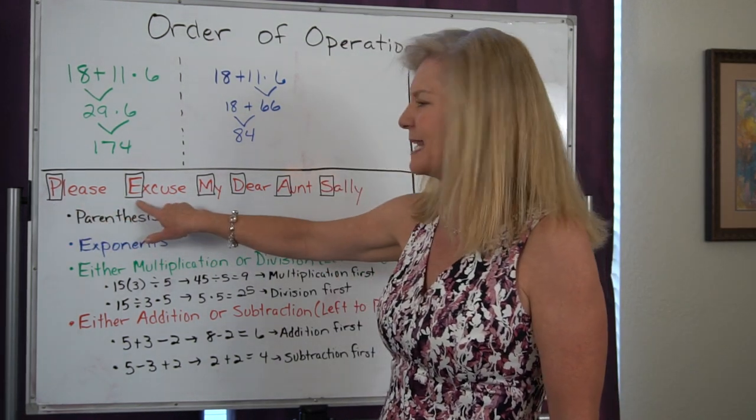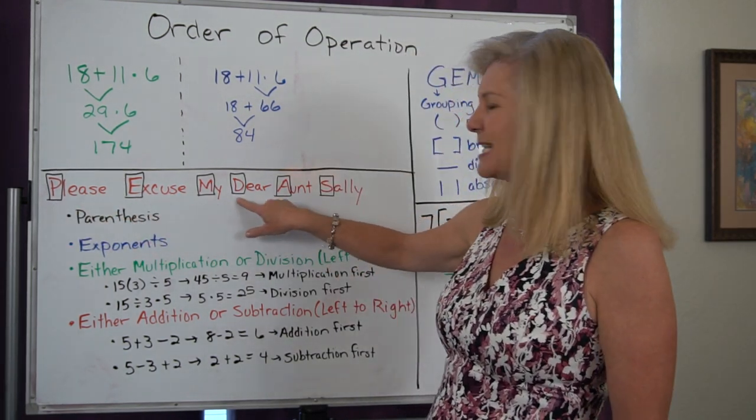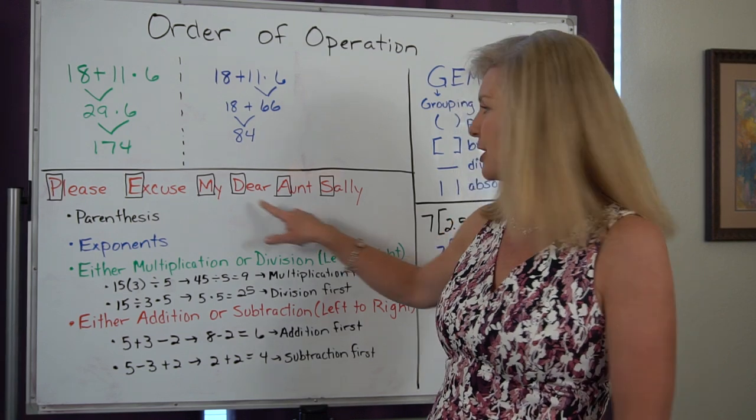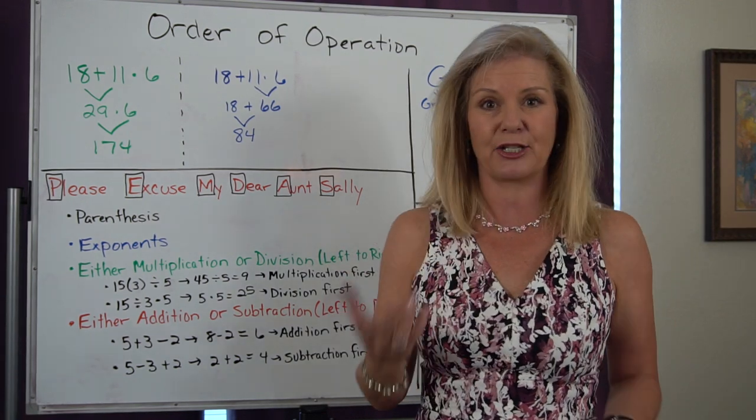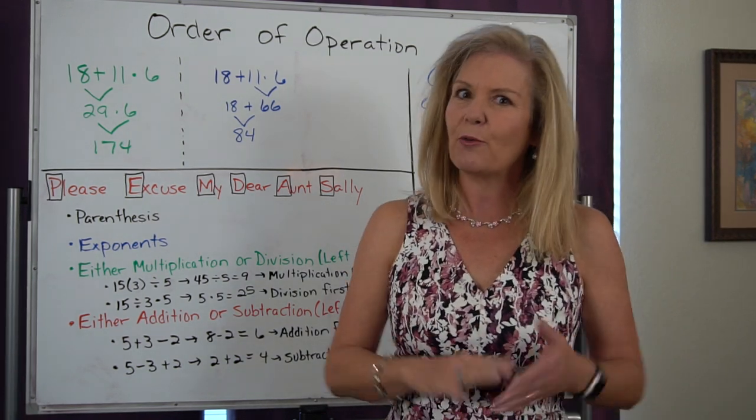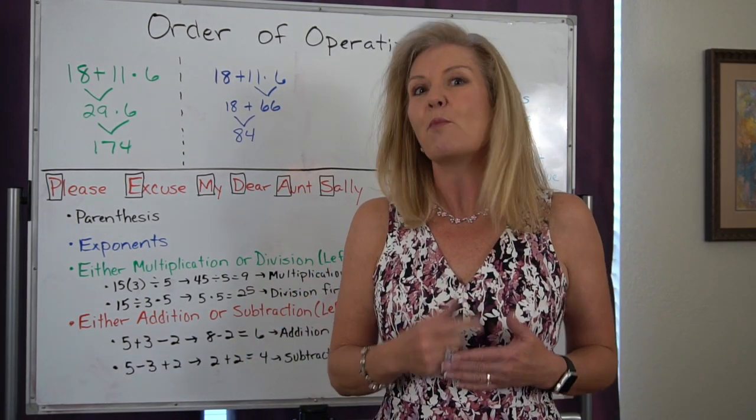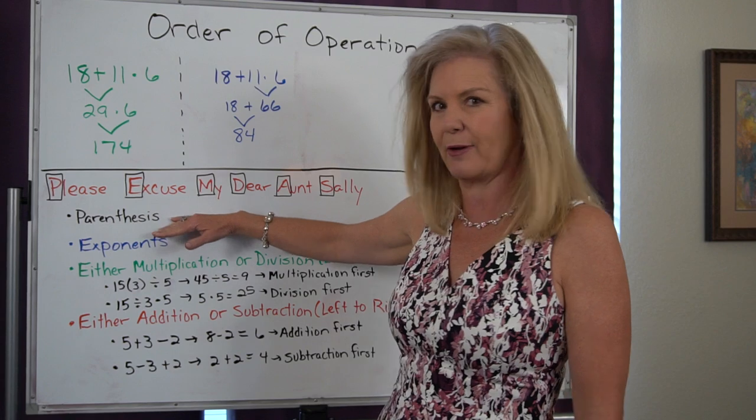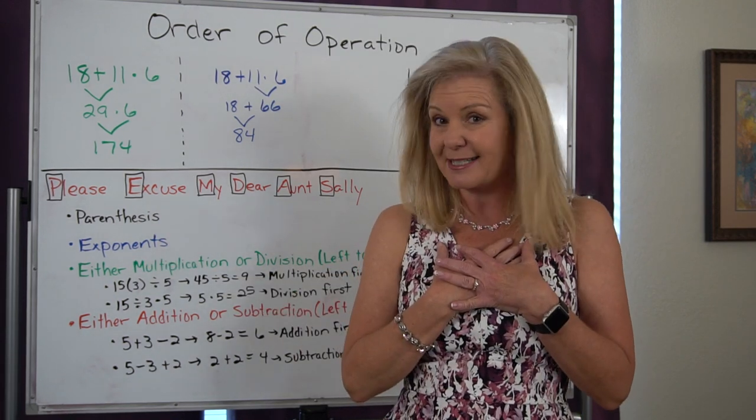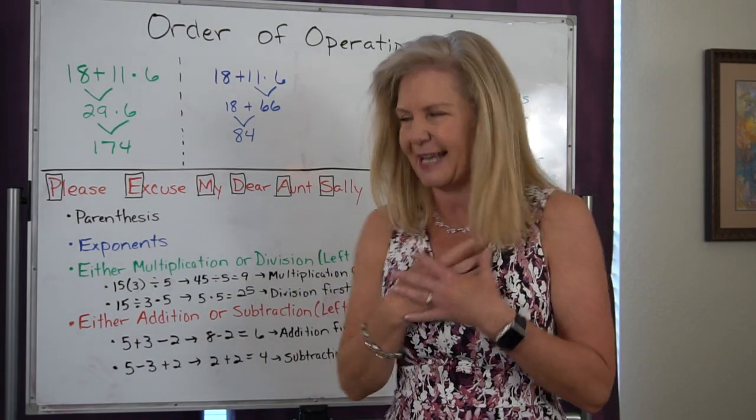P stands for parentheses. E is the exponents. M and D are my multiplication and division. A and S are my addition and subtraction. We know algebra gets a lot more complicated, and so we have more grouping symbols than just parentheses.